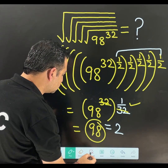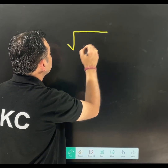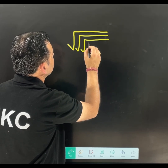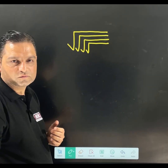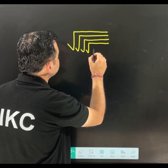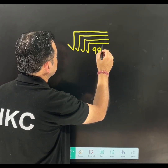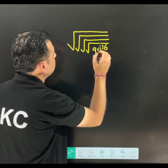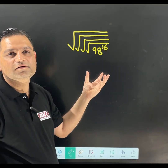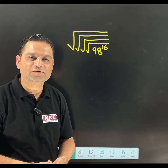I am giving you one small practice question. Let us see how many of you would be able to do it. There are 4 square roots, and the question is 98 to the power 16. Let us see who is going to give us the correct answer. Thank you so much for watching today's video.